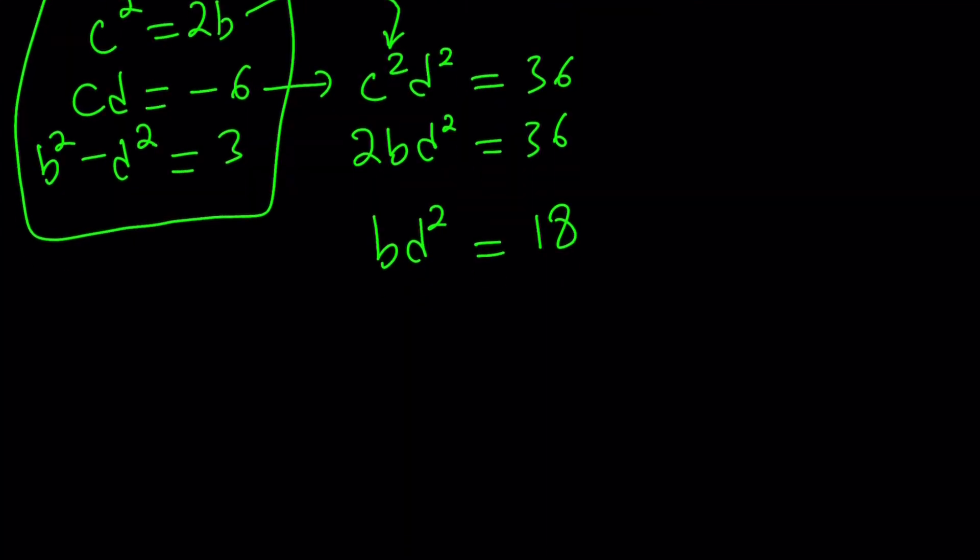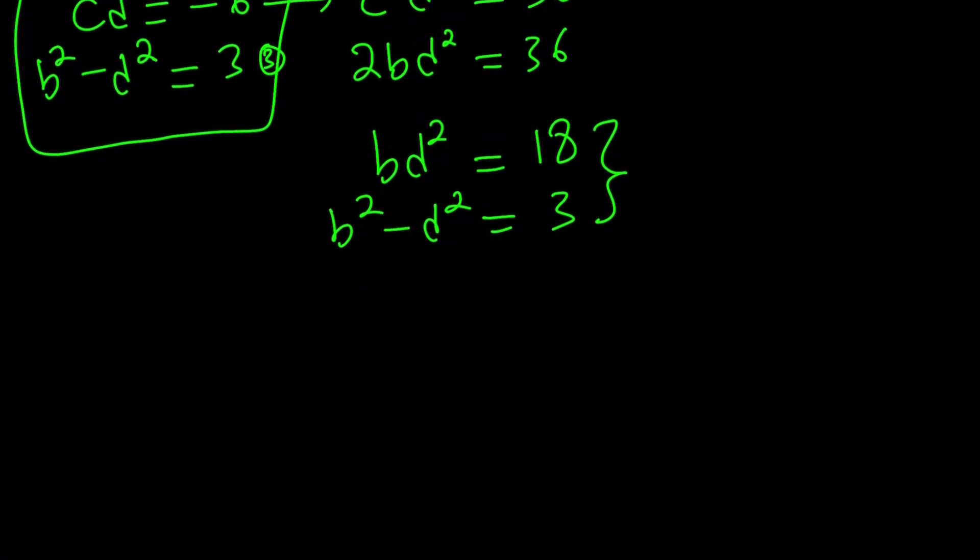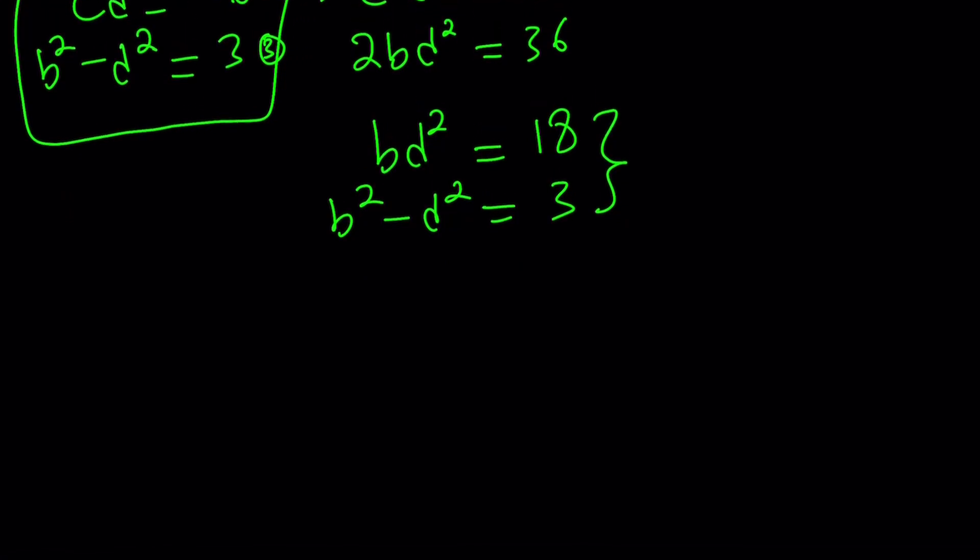And now I can use the third equation, this one: b squared minus d squared equals 3. Now I got another system which is actually easier to solve than the previous one because I only have two variables. So we used substitution, got rid of one of the variables.